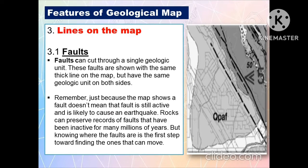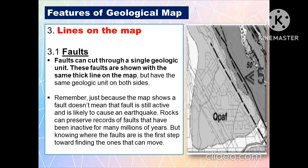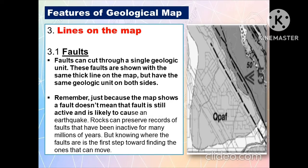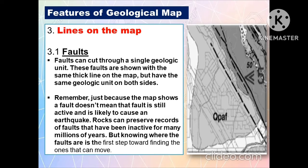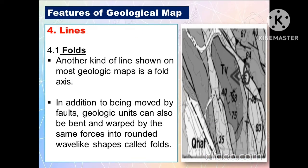Another feature of geological maps under lines on the map is faults. Faults can cut through a single geologic unit. These faults are shown with the same thick line on the map but have the same geologic unit on both sides. Remember, just because the map shows a fault doesn't mean the fault is still active and is likely to cause an earthquake. Rocks can preserve records of faults that have been inactive for many millions of years, but knowing where the faults are is the first step toward finding the ones that can move.